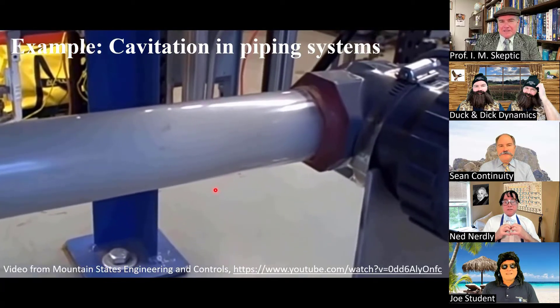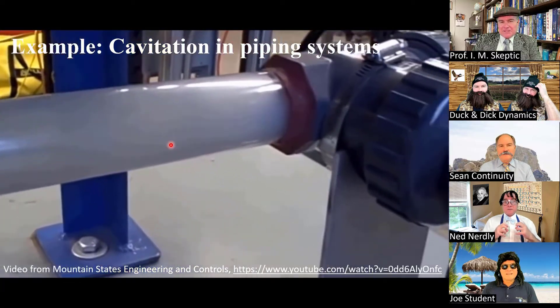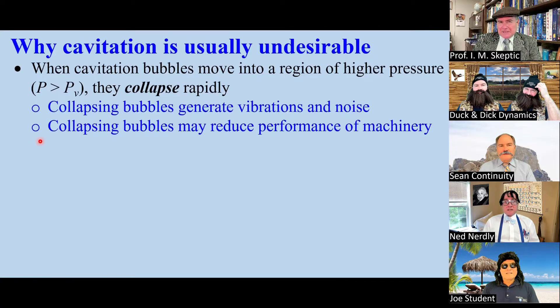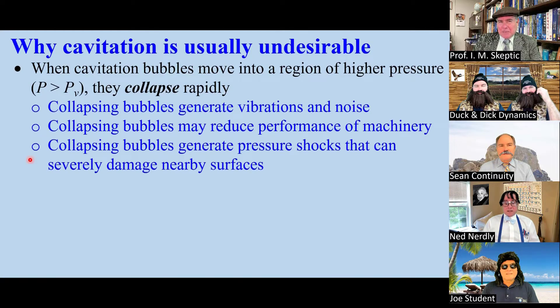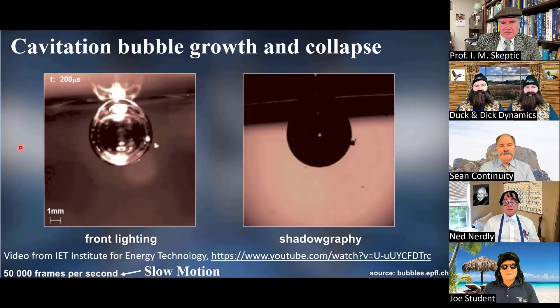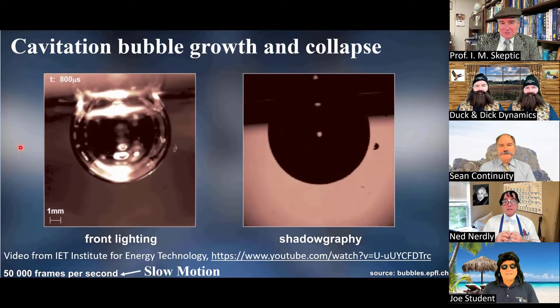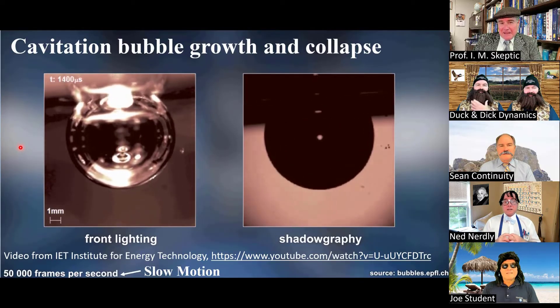Here's an example of cavitation in a pipe. You can both see the bubbles and hear them. These collapsing bubbles may reduce performance and can severely damage nearby surfaces. Here's a slow motion video of bubbles growing, and then now they collapse very rapidly.